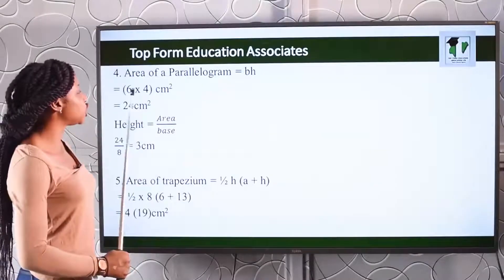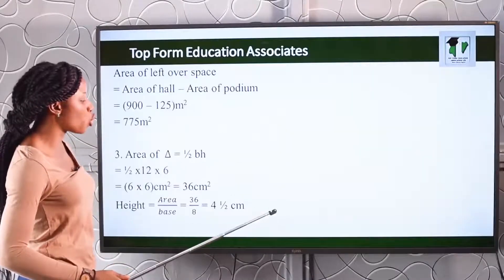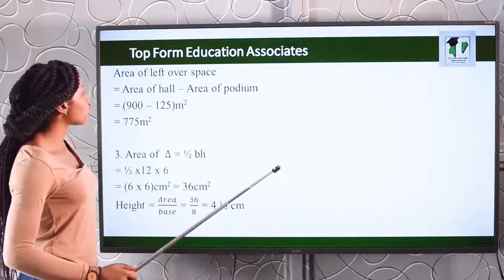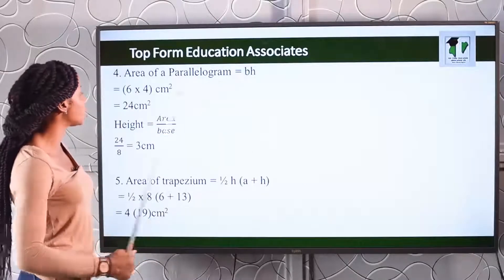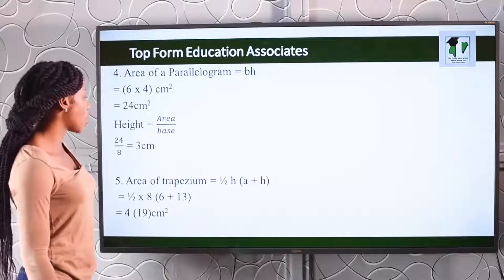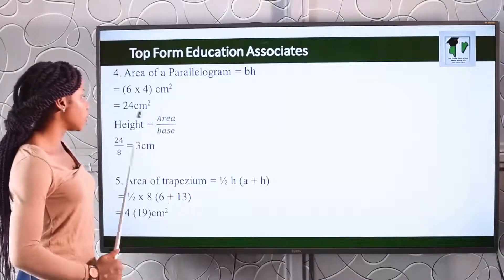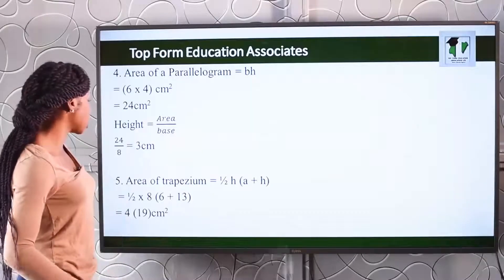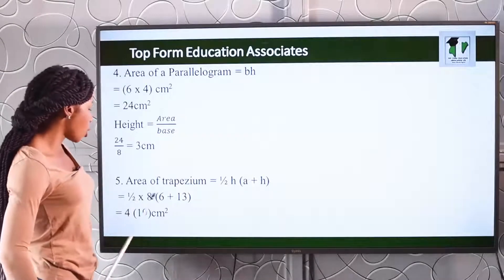Number four: the parallelogram has two parts. The formula for area of a parallelogram is base times height, giving an area of 24 centimeters squared. To find the height of the other part, we divide the area by the base, which is 8 centimeters. The height is 3 centimeters.